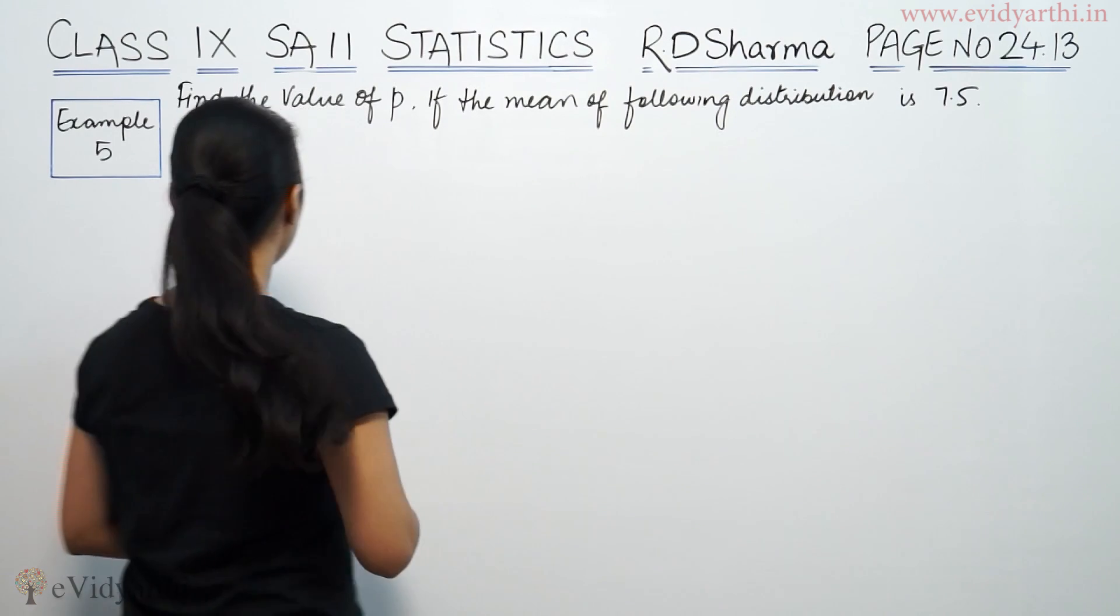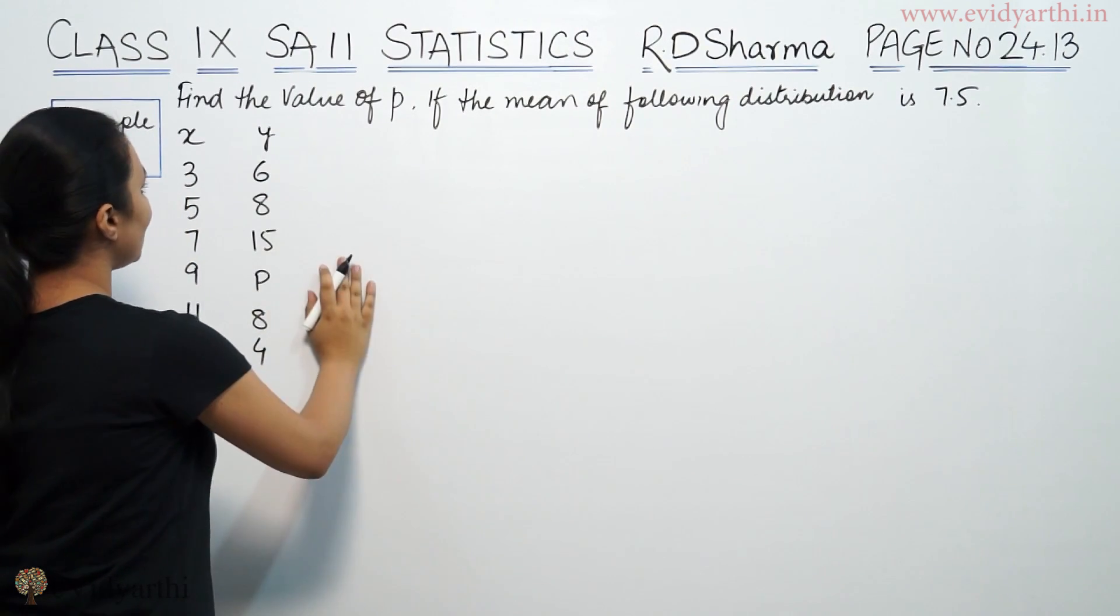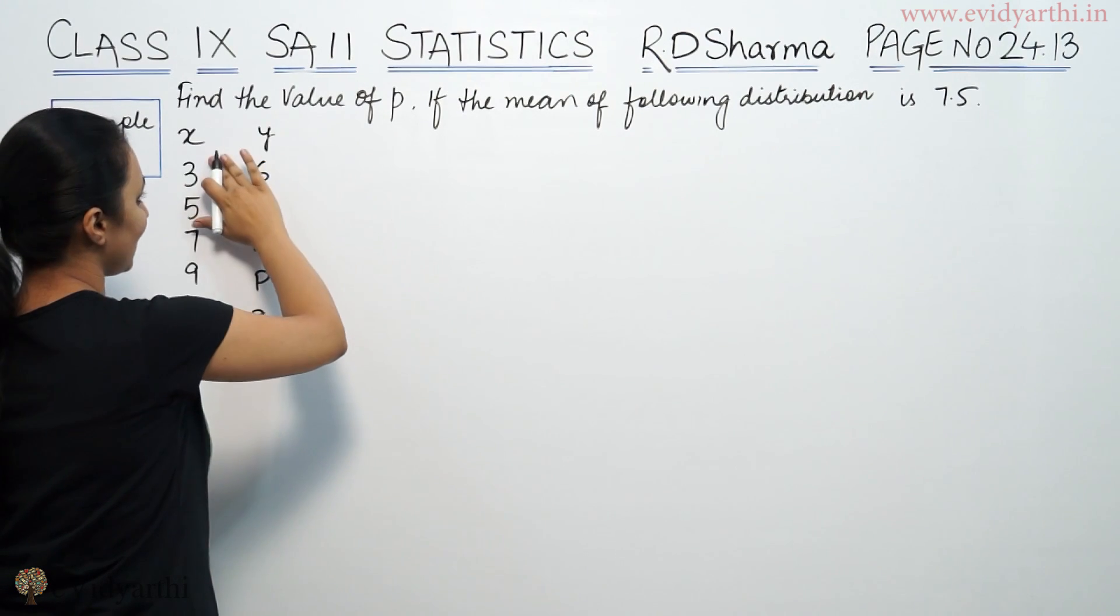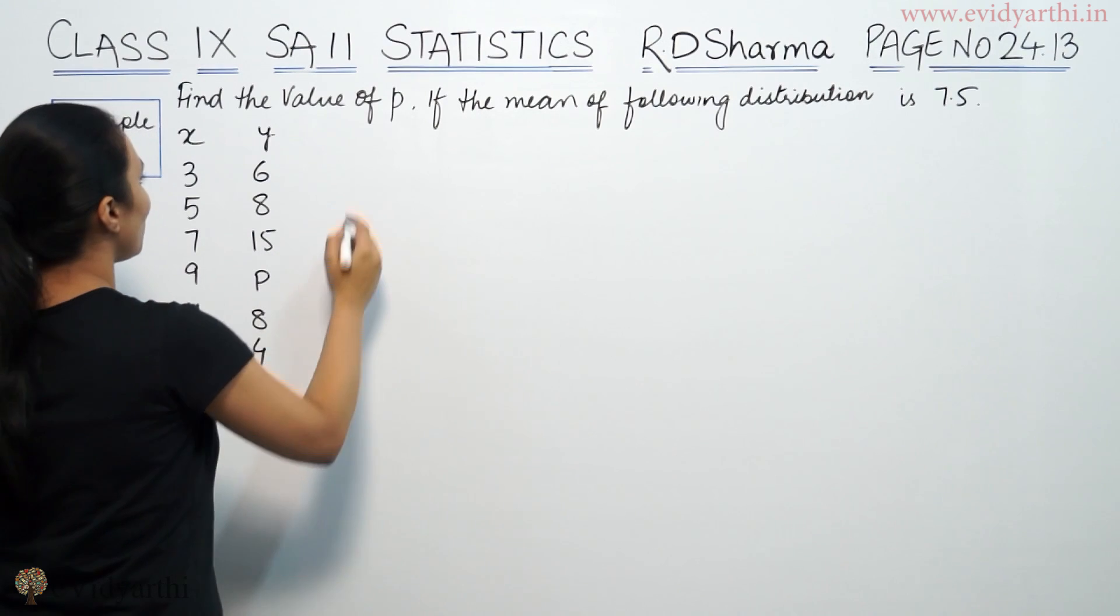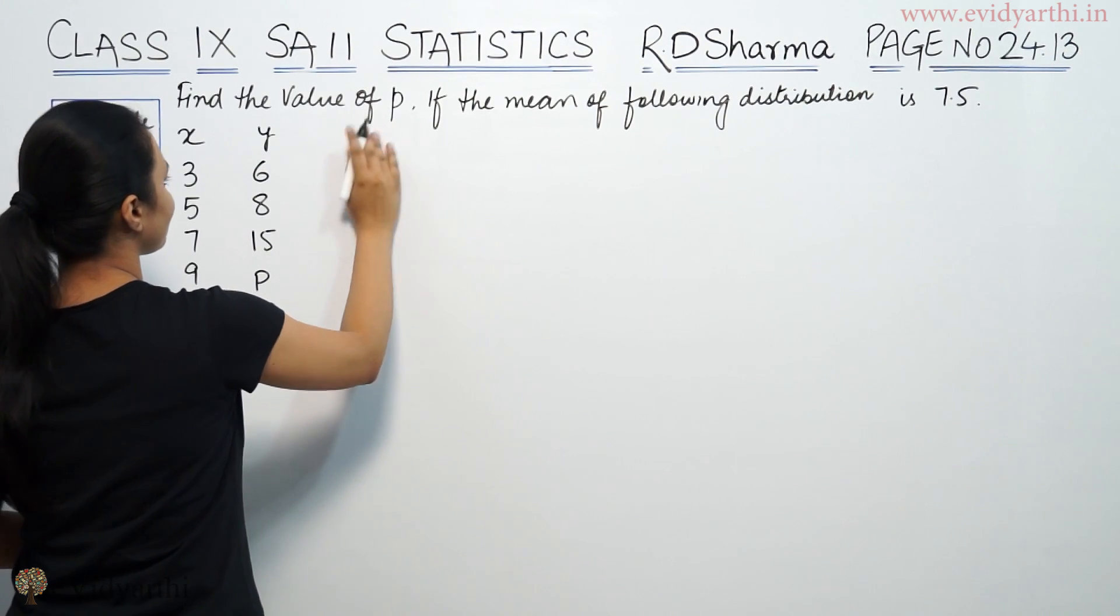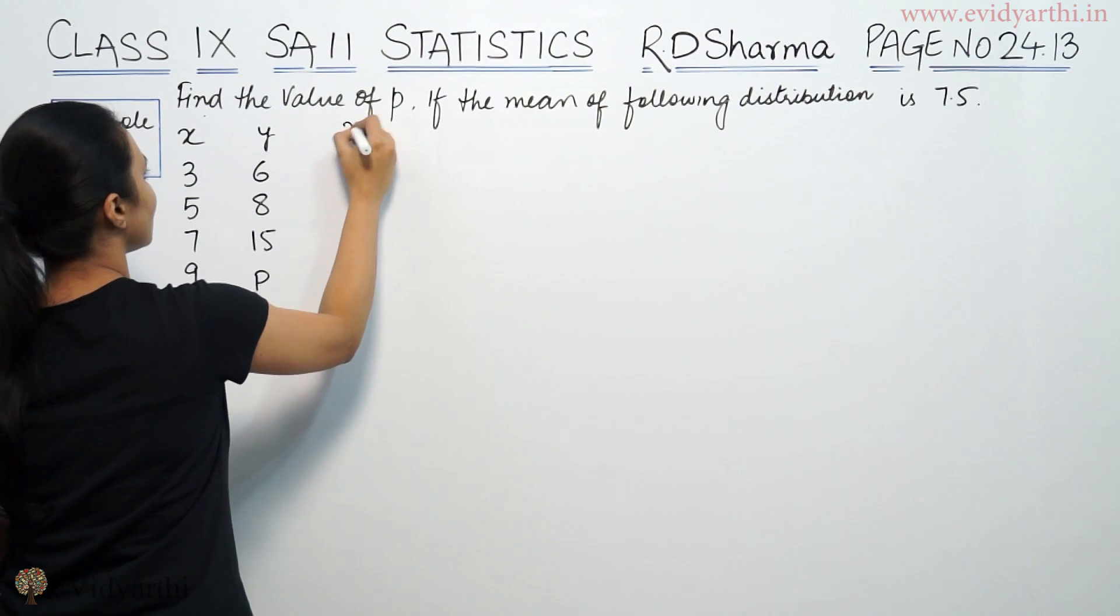Now the mean is given, we have to find the value of P because it is not given. So here, first of all, we have a column in X_i and a column in Y which is basically f_i. So, first of all, we will multiply these numbers.